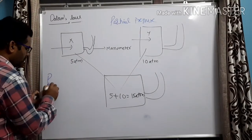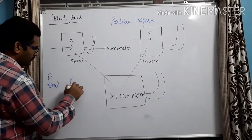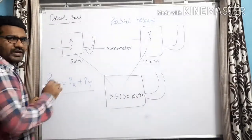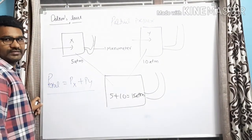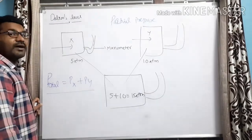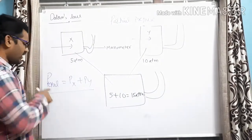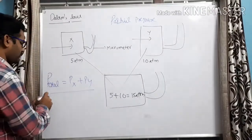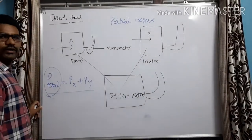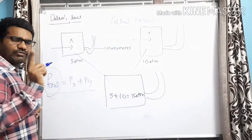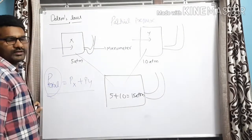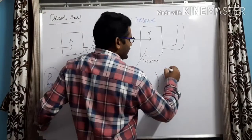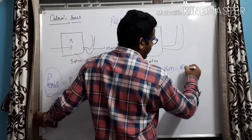So when the mixture is taken, I can write the equation as: P_total = P_X + P_Y. What is P_X? — the partial pressure of X. What is P_Y? — the partial pressure of Y. What is P_total? — the total pressure when the two gases are taken in the same container. One very important condition: the two gases must be non-reactive.